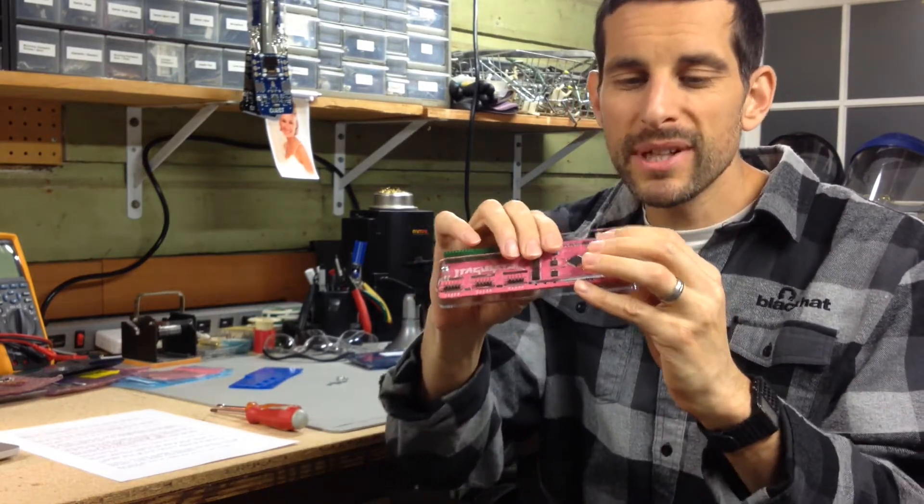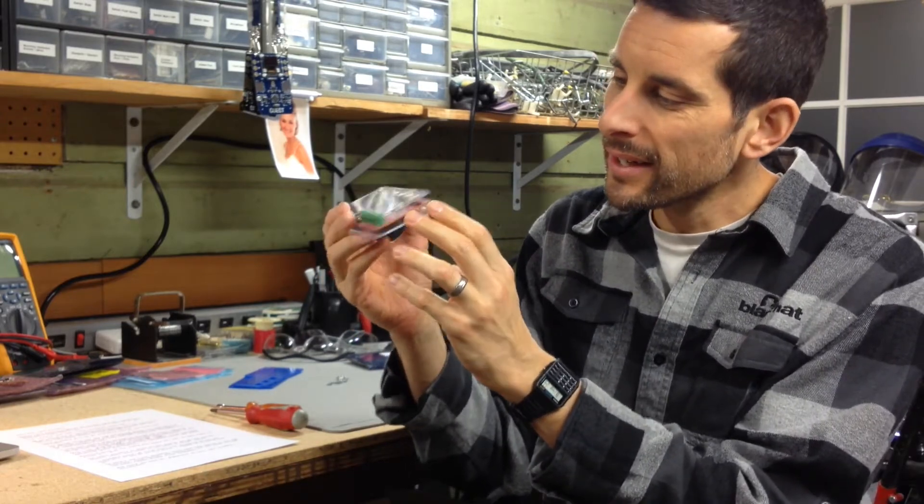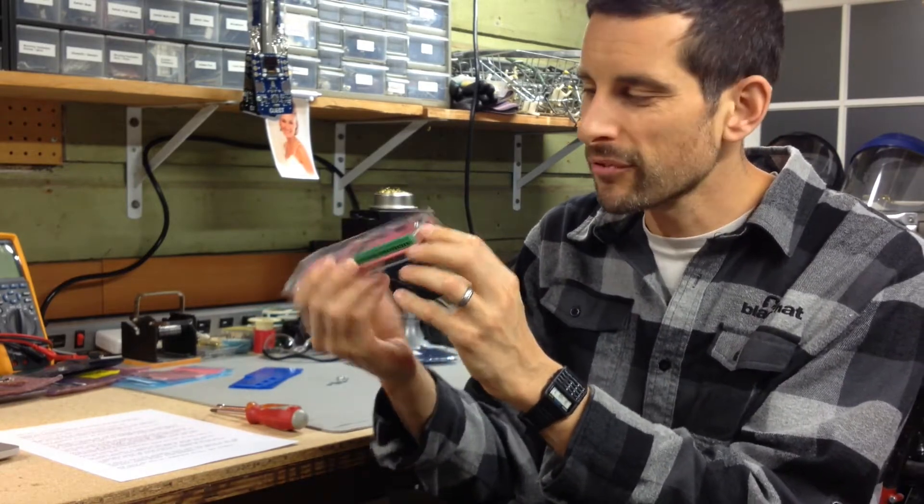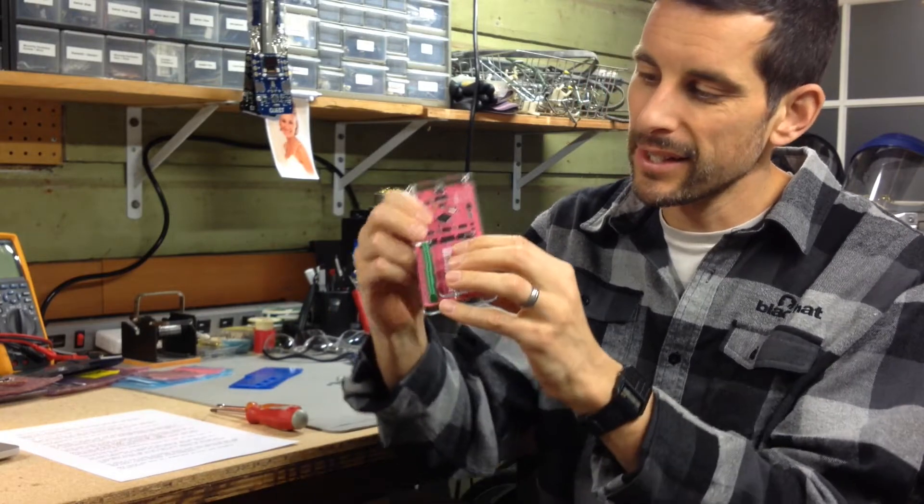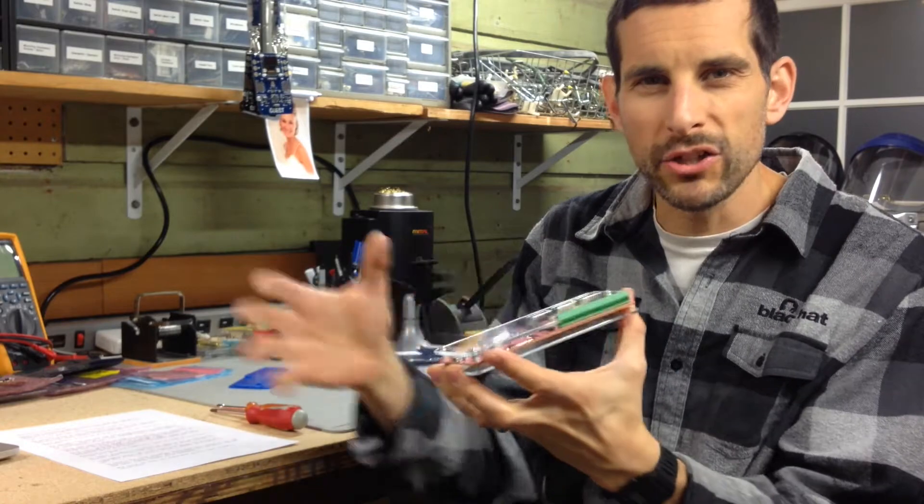This case is a pretty simple design just using two pieces of 1/8 inch acrylic and some screws and some threaded standoffs. So it's nice to kind of protect the unit if you're traveling or if it's on your workbench and stuff might sit on top of it, and it looks pretty cool too.